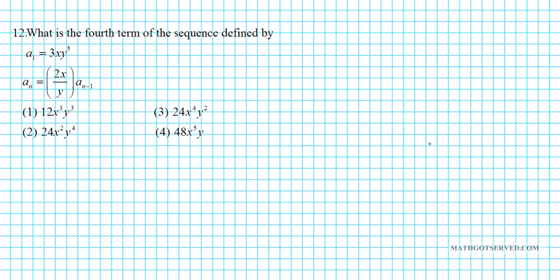Let's take a look at problem 12. It reads: what is the fourth term of the sequence defined by A₁ = 3xy⁵, and Aₙ = (2x/y) × Aₙ₋₁? This is a recursive definition problem where each term depends on the one before it.